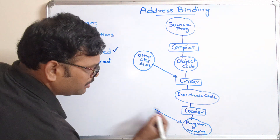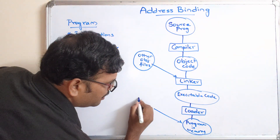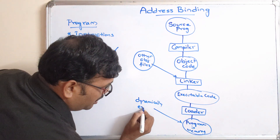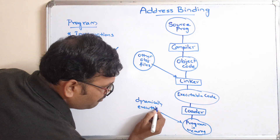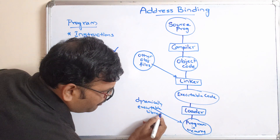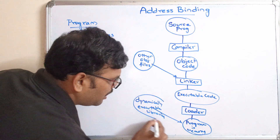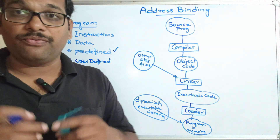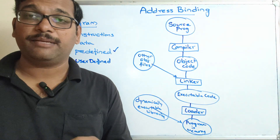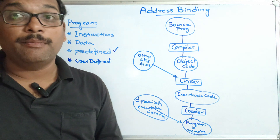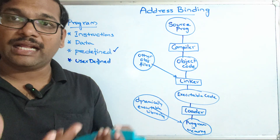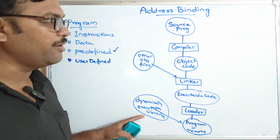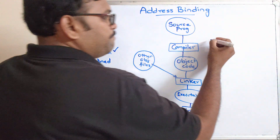There is one more thing: dynamic executable libraries. There are some libraries that can be included during the runtime. For example, in C there is a concept called dynamic memory allocation, where memory is allocated during runtime. That type of operation happens at this stage.